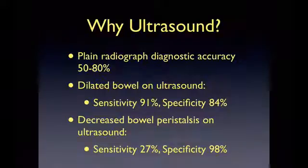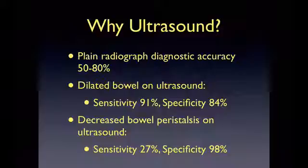Imaging plays a vital role in diagnosis of SBO. Plain radiography is typically the initial imaging modality used in the ED when SBO is suspected. However, the diagnostic accuracy varies between 50% to 80%. A recent ED-based study by Jang et al. shows that ultrasound compares favorably to x-ray in the diagnosis of SBO. Patients had an emergency physician-performed ultrasound prior to x-ray or CT. The study found that dilated bowel on ultrasound had a sensitivity of 91% and specificity of 84% for SBO, and decreased bowel peristalsis on ultrasound had a sensitivity of 27% and specificity of 98% for SBO. This data suggests that ultrasonography, rather than x-ray, should be considered as a first-line imaging modality when SBO is on the differential diagnosis.